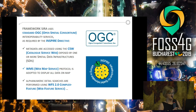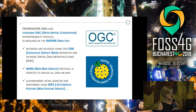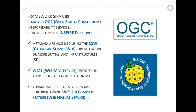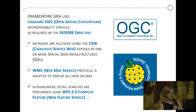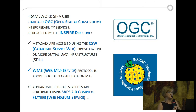For metadata we use Catalog Service for the Web. To put data on the map we use, naturally, Web Map Service. What we do that is new is to use the protocol Web Feature Service 2.0 complex type — a complex feature. That is one of the standards that the INSPIRE Directive decided to use.